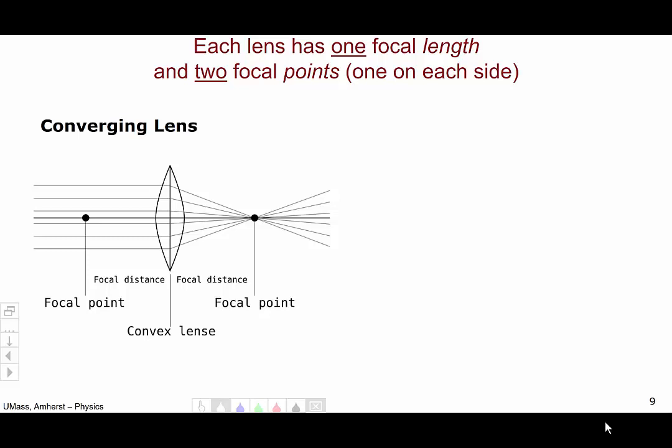Every lens has only one focal length, but two focal points, with one on each side. So, here we can see the full setup for a converging lens. Now, in this case, we've got the light coming in from the left and moving towards the right. We can see the two different focal points, one on each side of the lens, each a focal length from the center of the lens. And these two focal lengths are the same.